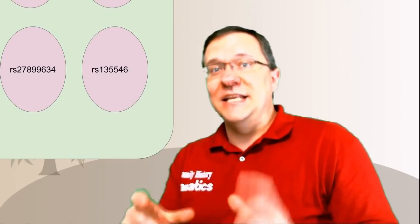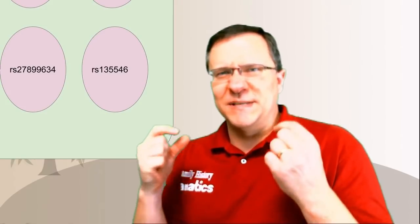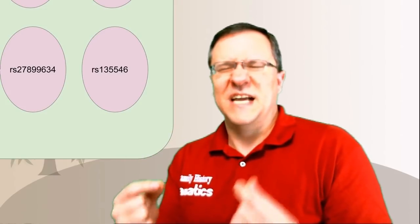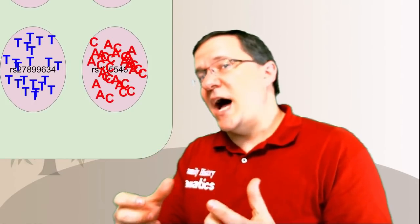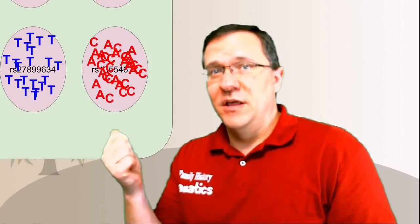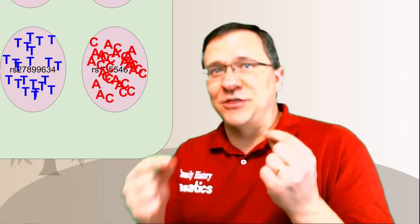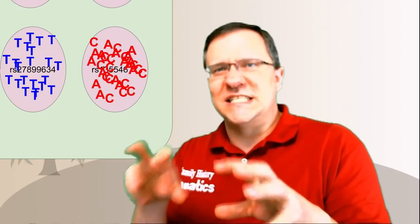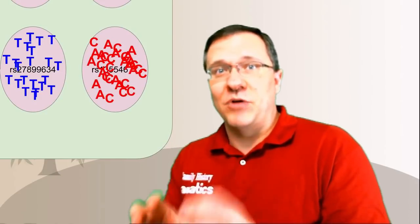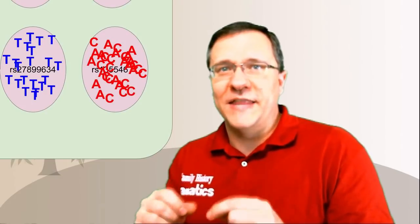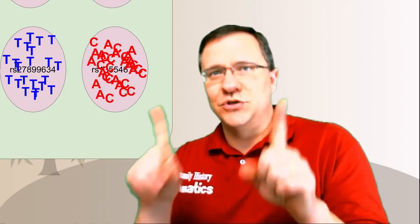On this microarray chip there are 700,000 spots and each spot is sticky to a specific SNP — a specific point along your DNA. When you dump a pile of DNA onto this chip, that DNA at those specific spots are all going to stick in those specific locations. What you end up with is a pile of letters that represent what is on that SNP on those two chromosomes.